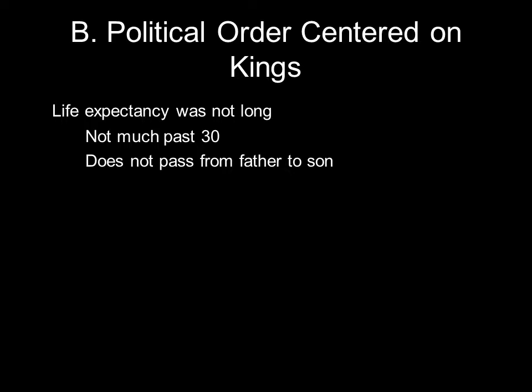Life expectancy was really not all that long in ancient China. People probably lived to somewhere around the age of 30. So what that means is, if you served as king for a while, chances are you were only going to live to be 30 or 31 years old, and then you die. The question becomes: what happens to the monarchy? If you've studied British history, you know that the monarchy tends to be passed on from father to son.